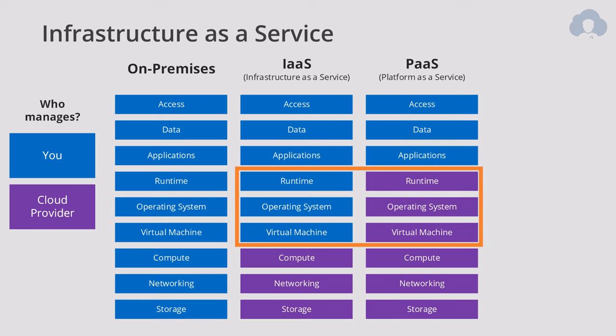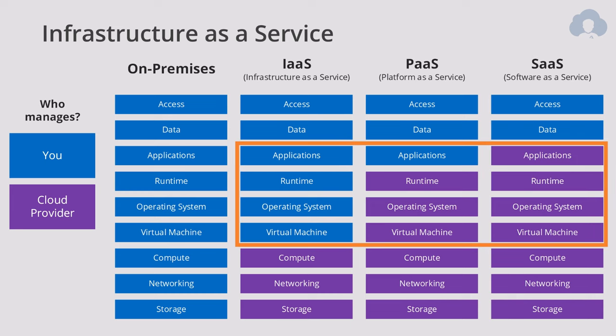When compared to platform as a service, you have to manage a bit more with virtual machines. So if you were using App Service, you wouldn't have to manage the runtime, operating system, or the virtual machine underneath. It is advised that you still use platform as a service whenever possible, and only go back to virtual machines when necessary by your design. In the case of SaaS, the application is managed by the cloud provider as well.